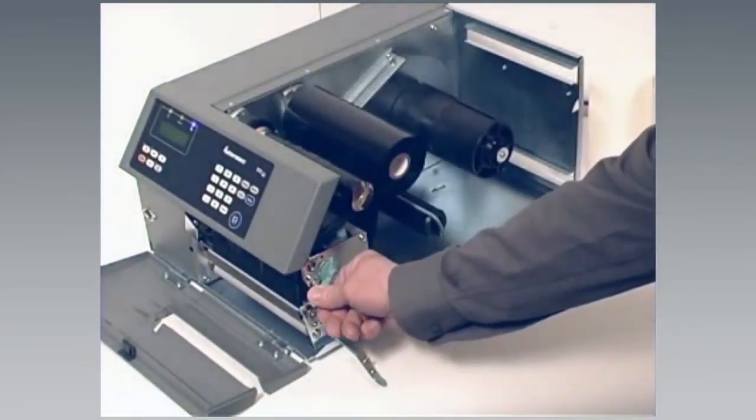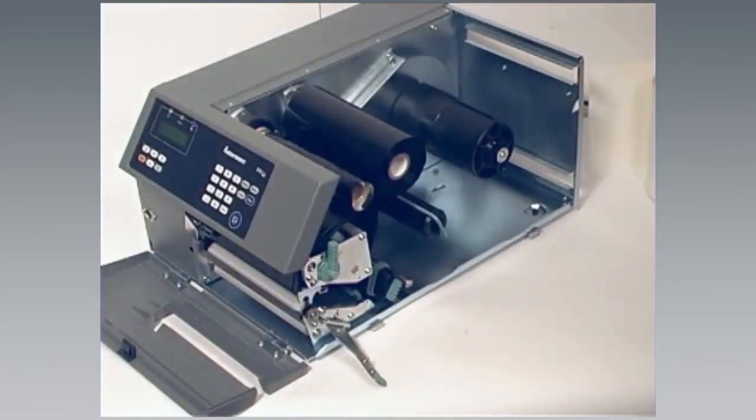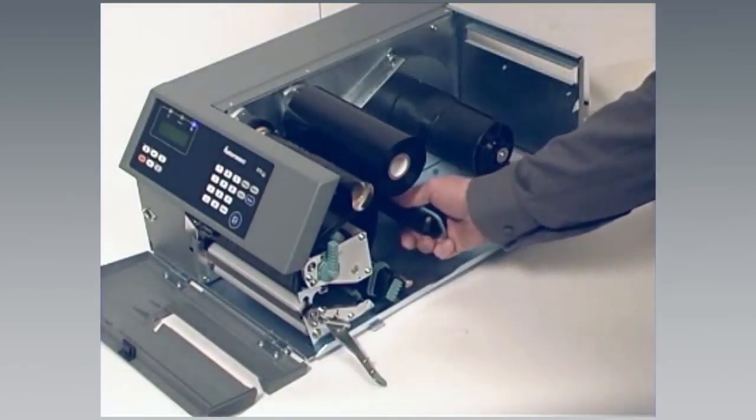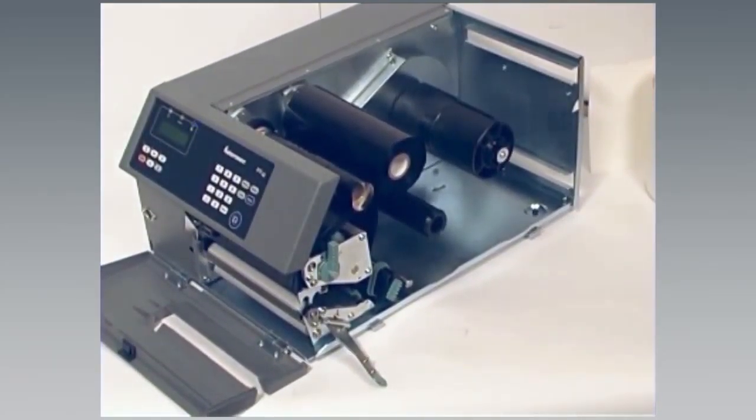Turn the printhead lift lever counter or anti-clockwise to raise the printhead. Pull out the green clip on the liner take-up hub. If the printer was used for peel off labels previously, dispose of any wound up liner.